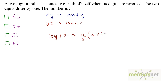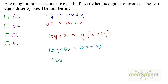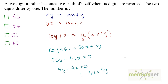Moving 6 to the left: 60y plus 6x equals 50x plus 5y. Rearranging: 55y minus 44x equals 0. Dividing by 11 gives 5y minus 4x equals 0, so 4x equals 5y, meaning x divided by y equals 5 divided by 4. Therefore x equals 5 and y equals 4, so the number is 54.